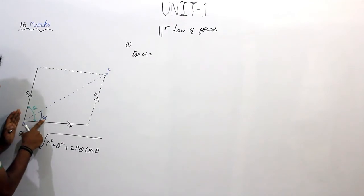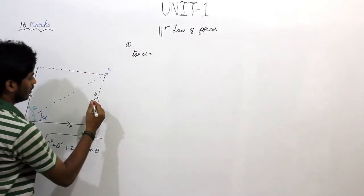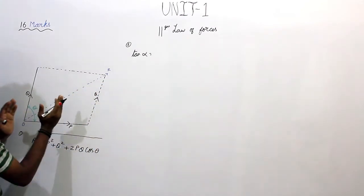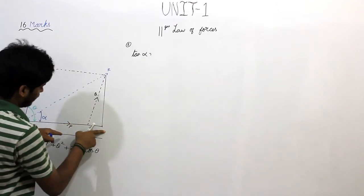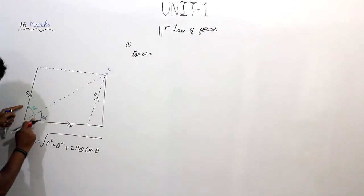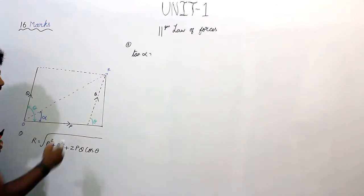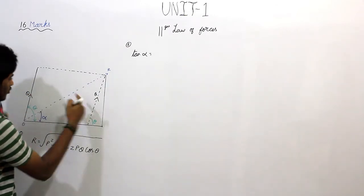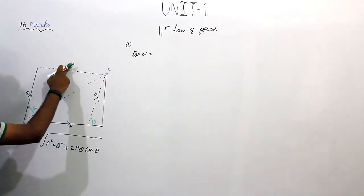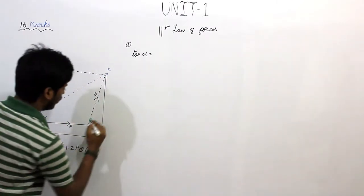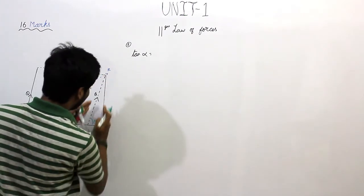Tan alpha is opposite side by adjacent. We are going to extend the panel. This is the angle theta. This is q, and this is q, because these two are parallel. This is the p force and this is the p atom. This forms a triangle.